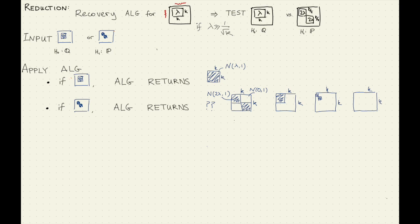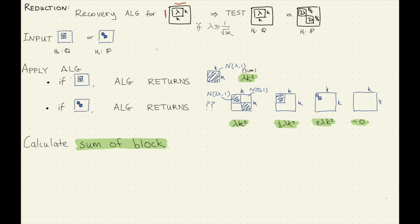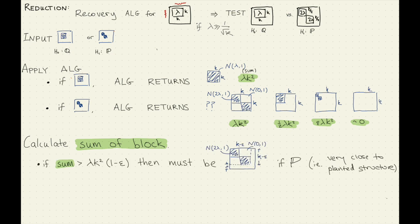We have the guarantee that it returns the right thing in H-naught and something else in H1. Now you've got this K-by-K block and you want to do some tests. One thing you can do is calculate the sum of the block. If there is just one block, you get one sum; otherwise, since we've normalized so the sum of the whole planted structure is the same, if you don't pick up all the planted structure you get a lower sum. This concentrates quite well, so you're getting very close to these values.